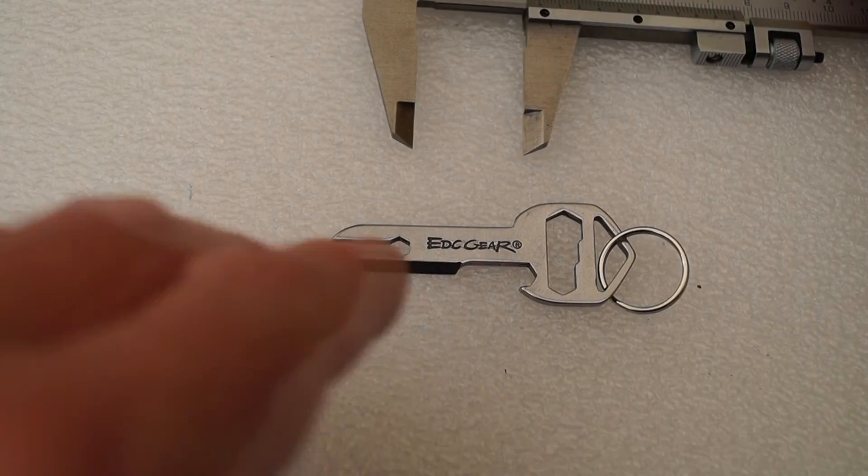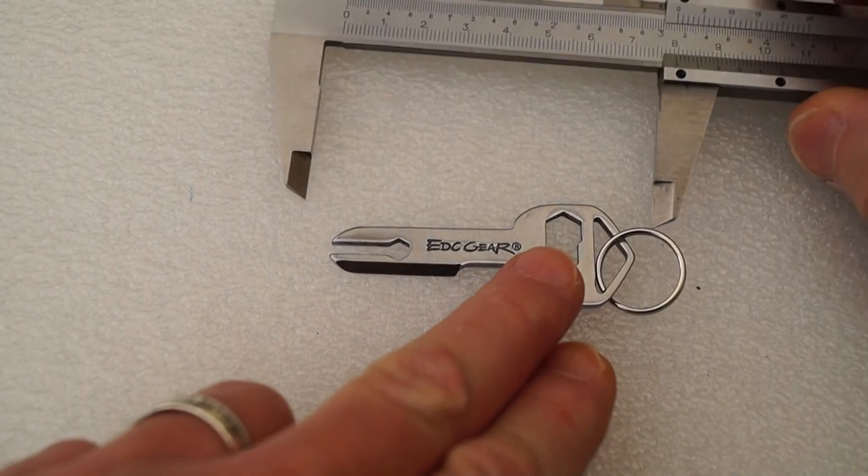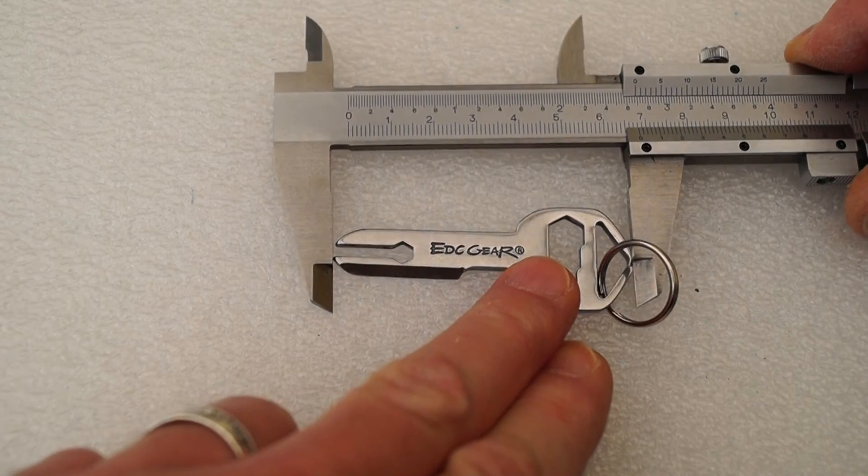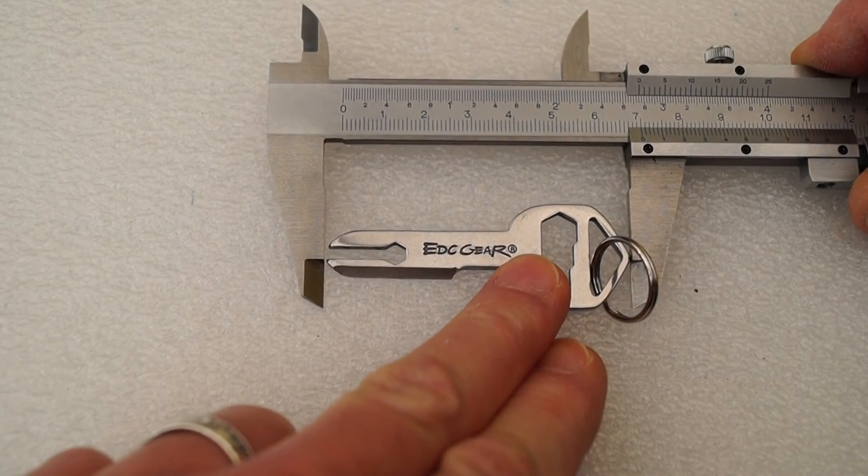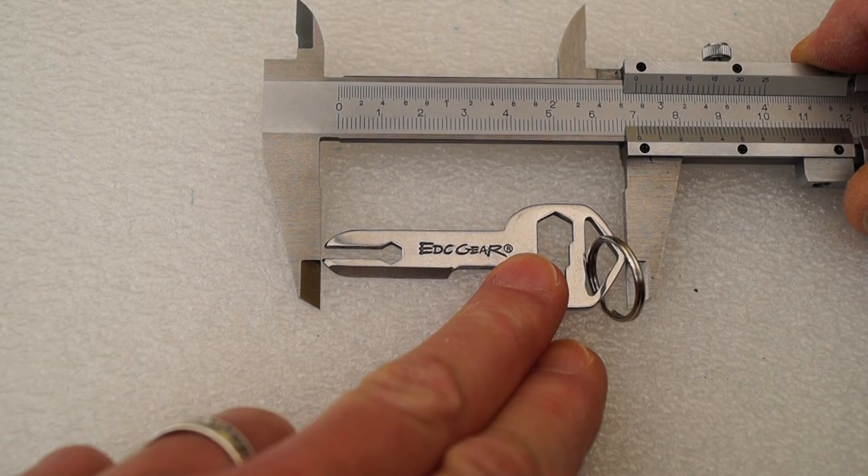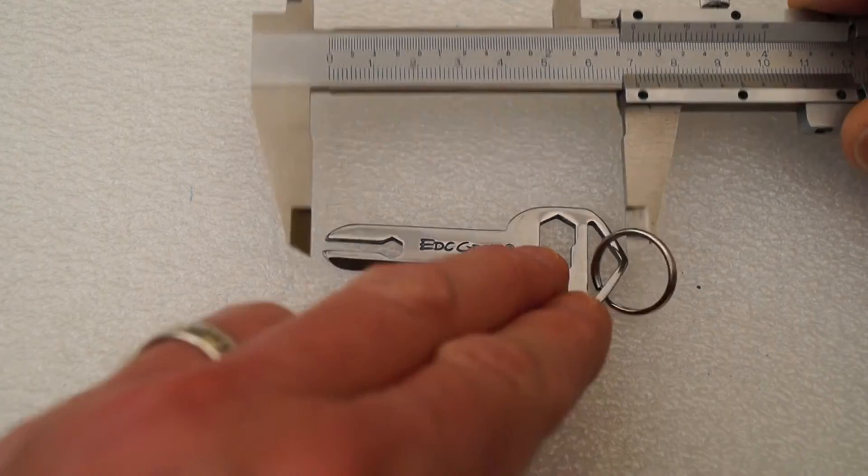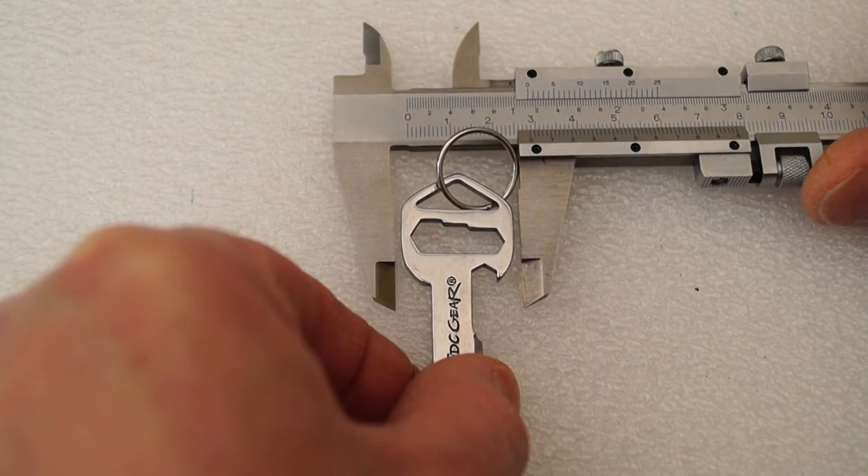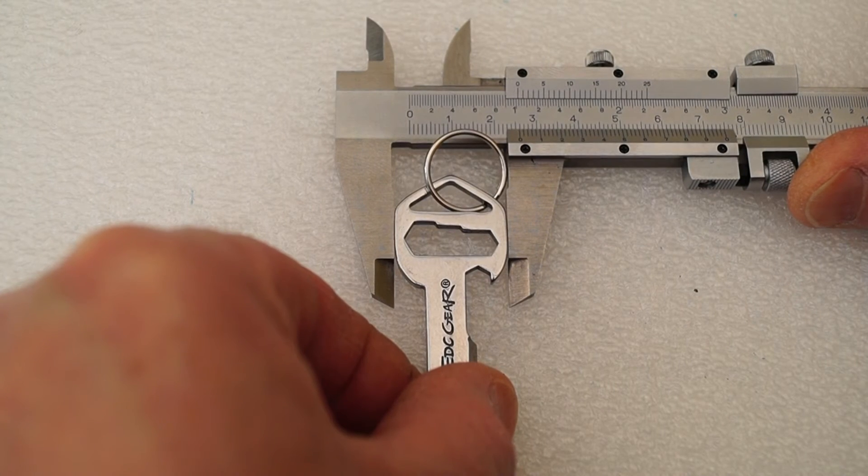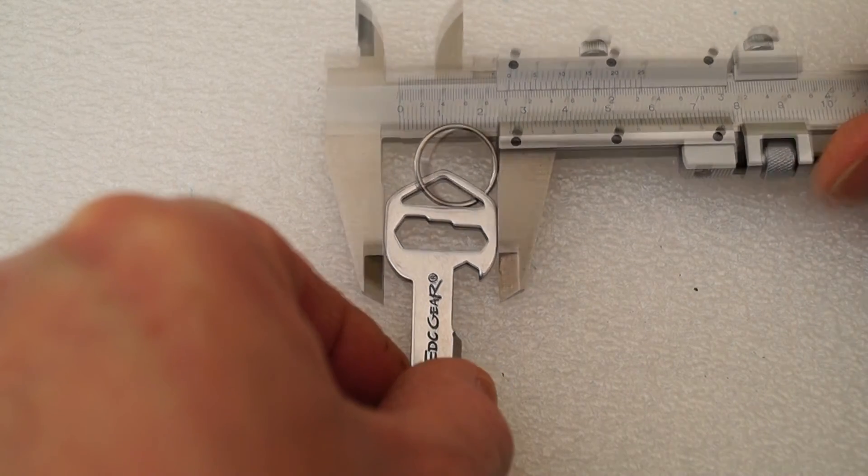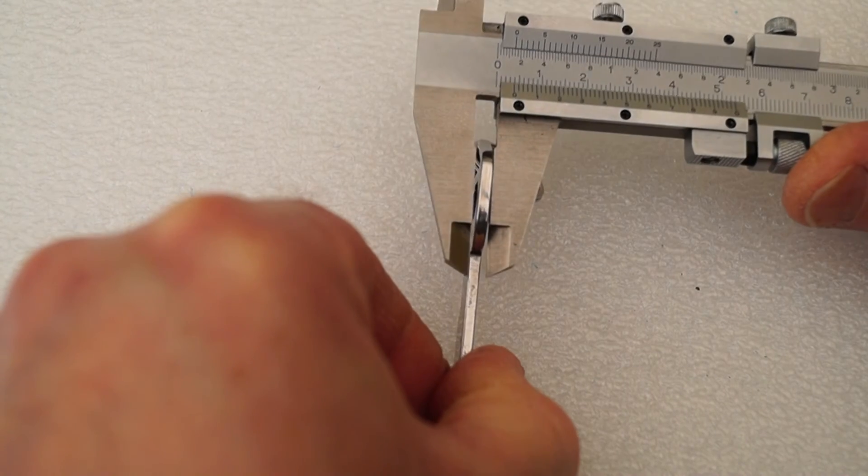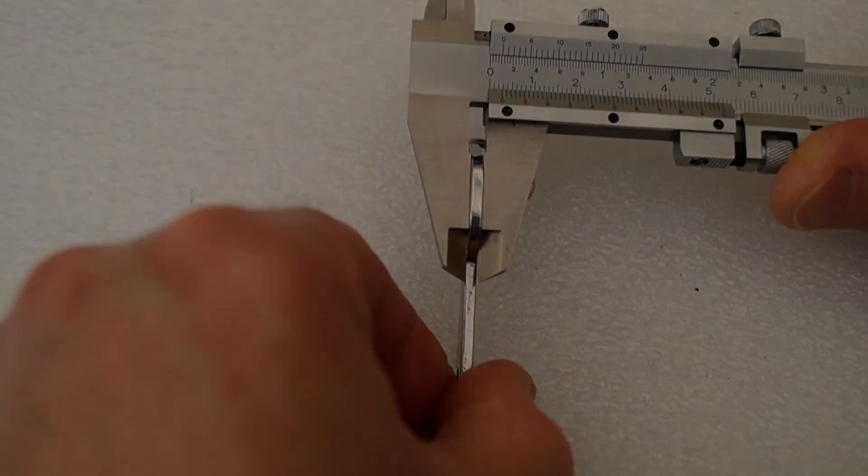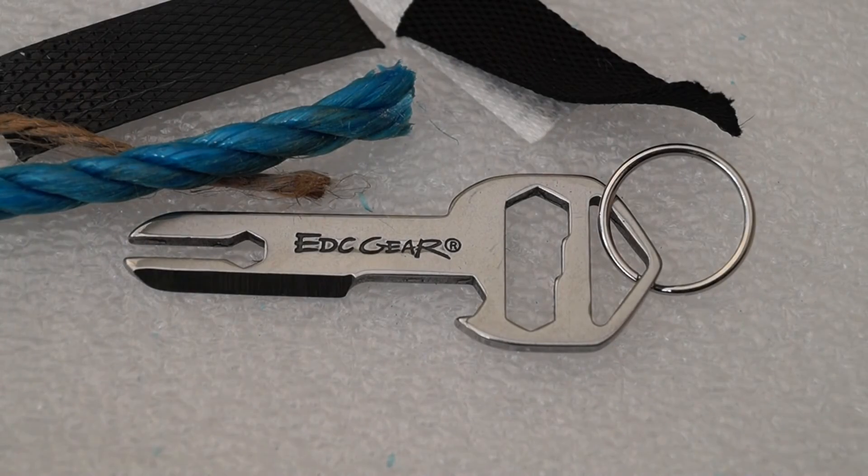And the dimensions of the clone are, let's have a look here, 69.5. And across here we have 25.7 and how thick is it, 2.7 mil thick.